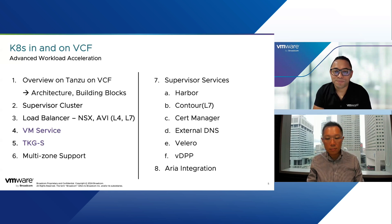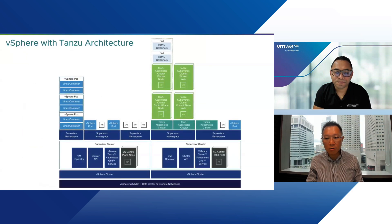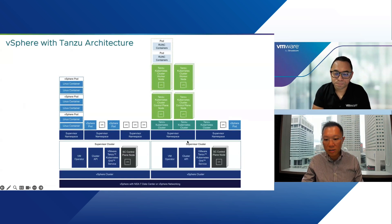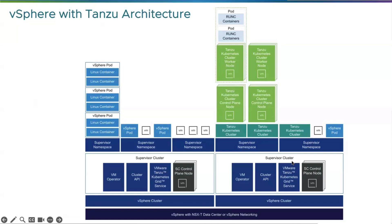Very quickly, to touch on the architecture again: we have the underlying VCF infrastructure and the supervisor cluster — that's required whether you want to use TKG or VMs. We also have two groups of personas. The VI admin creates supervisor namespaces, which is how they govern resources for consumers — whether a DevOps team or an application team. Once a supervisor namespace is created and given to the DevOps team, they can create different kinds of workloads: TKGs, upstream Kubernetes clusters, VMs, and pods running natively on the hypervisor.